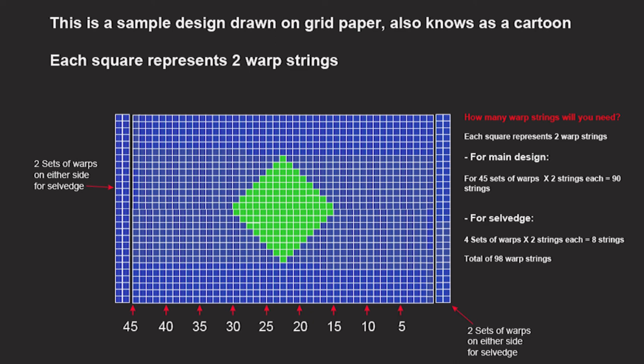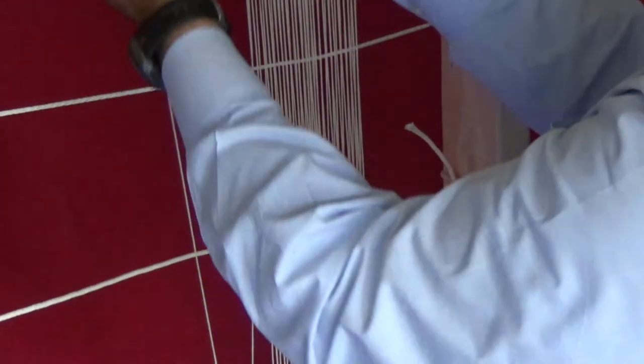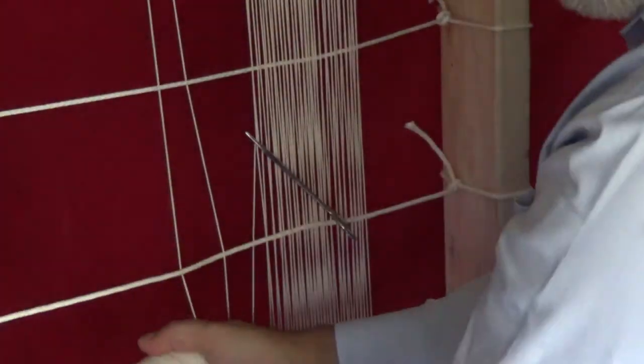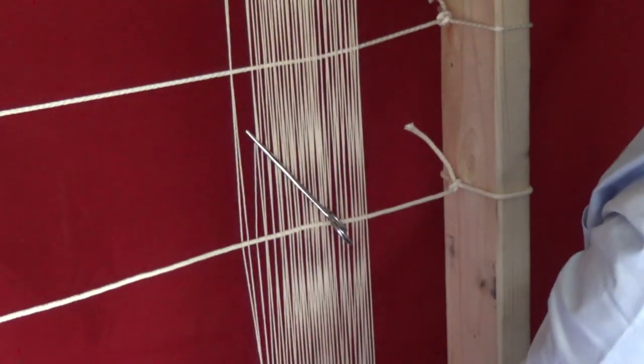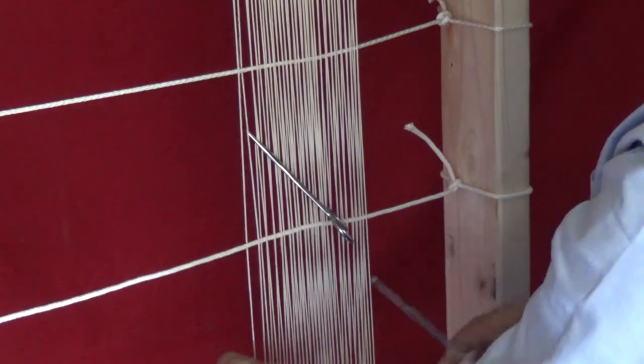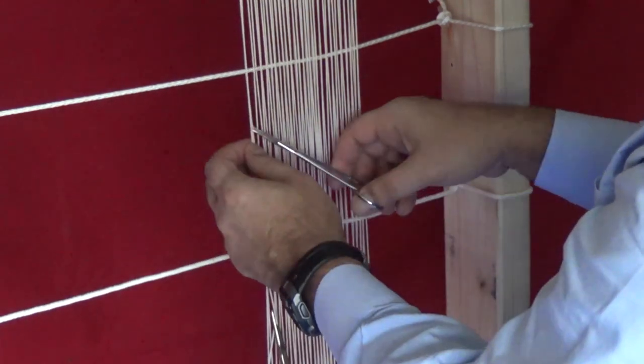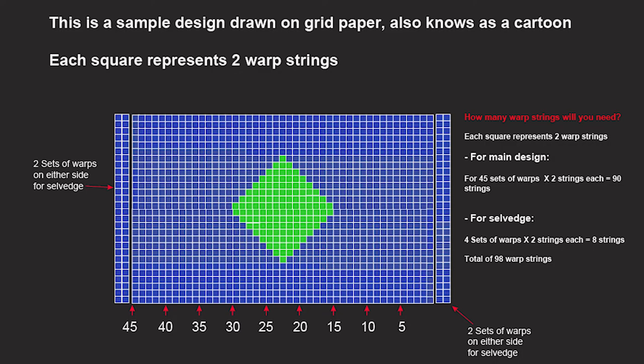So, you will need 49 pairs of warp strings. Again, remember, each set of warps includes two strings. So, if your design requires 45 warps, multiply that by two and it gives you 90 warp strings. When you add two more pairs for the salvage on each side, it will give you 98 strings.